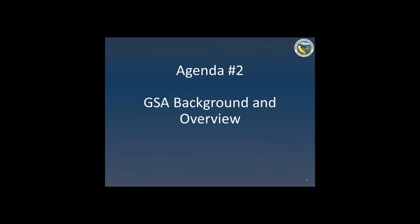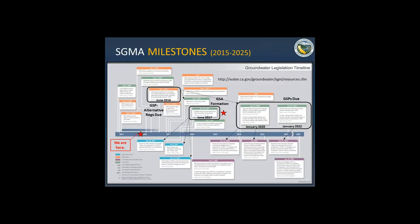We'll start with agenda item two — some GSA and SGMA background. This is a slide from our Sustainable Groundwater Management Strategic Plan showing major timelines. Starting from left to right: the box labeled June 2016 is when our regulations are due for groundwater sustainability plans as well as the alternative GSPs. I've drawn arrows to related boxes — alternative GSPs are due January 1st, 2017, and the longer arrow goes to where other GSPs are due.